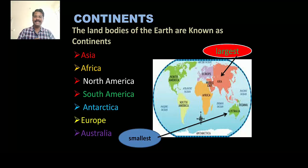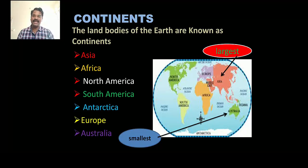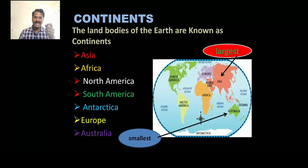Let us come to the continents. The land bodies of the earth are known as continents. The continents are Asia, Africa, North America, South America, Antarctica, Europe, and Australia — these are the seven continents. Among them, Asia is the largest continent and Australia is the smallest continent.